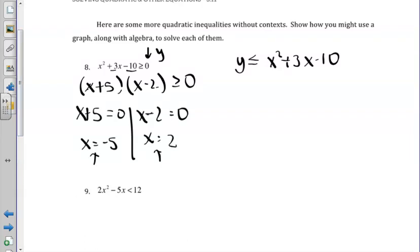So if you think about just sketching what a graph might look like of that, I know my boundary points are 2 and negative 5.